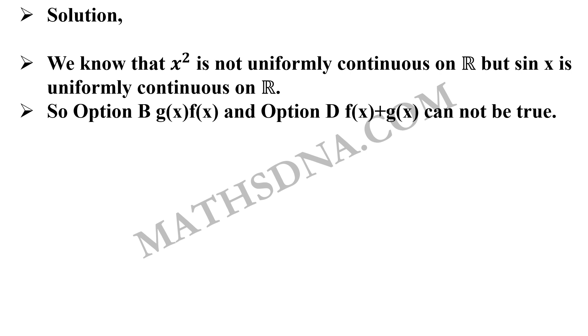From the above information, option b, that is g(x)f(x), that will be x² sin x, it will not be uniformly continuous. And option d, f(x)+g(x), that will be x²+sin x, will again not be uniformly continuous because x² is present in that.